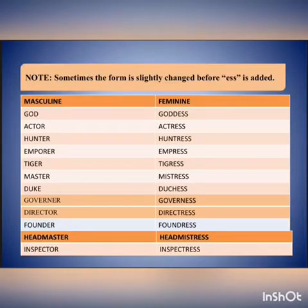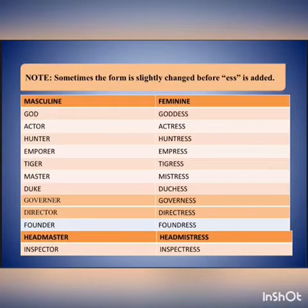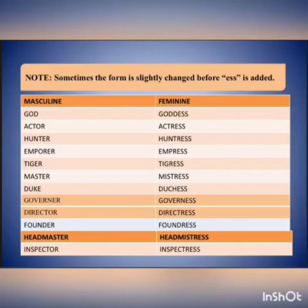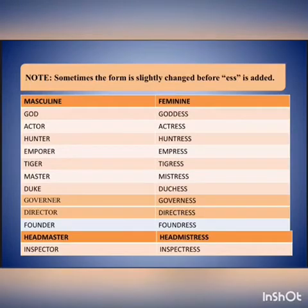Further examples with slight changes: hunter/huntress, emperor/empress, tiger/tigress, master/mistress, duke/duchess, governor/governess, director/directress, founder/foundress, headmaster/headmistress, inspector/inspectress. In all these cases we did not simply add -ess at the end but made some slight changes.